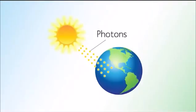Sunlight is made up of tiny packets of energy called photons. Every minute, enough energy falls on Earth to meet the world's energy demand for a whole year.